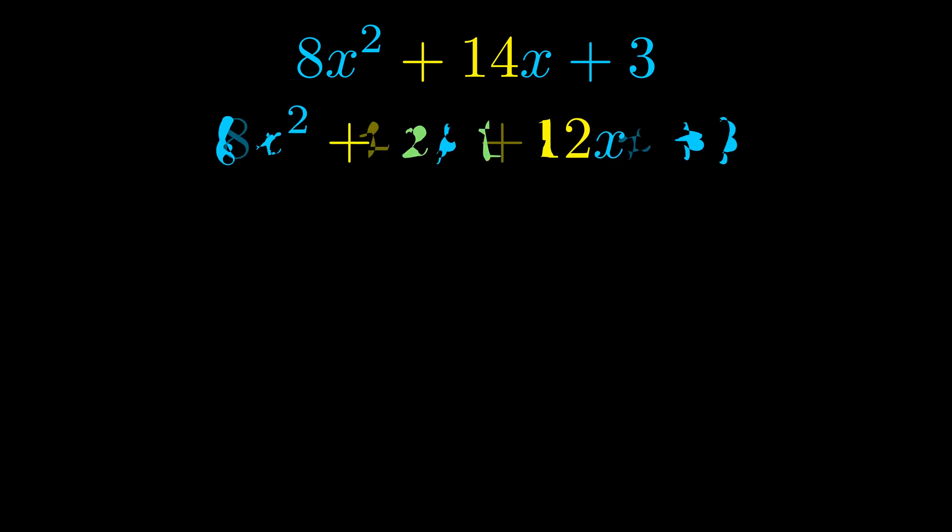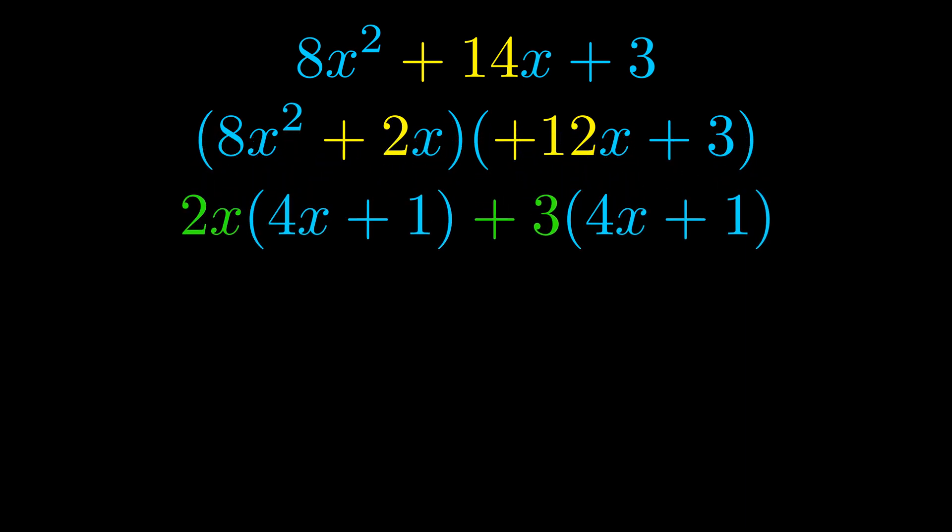Once we've done this we go ahead and we put parentheses around the first term in the last term. And we do that so that we can take the greatest common factor out of both terms. We can see the greatest common factor is now outside in green.